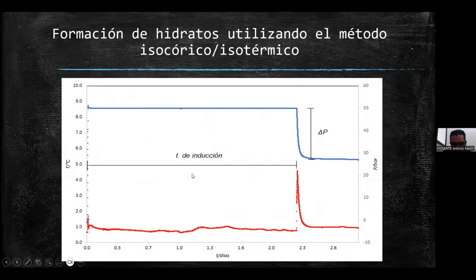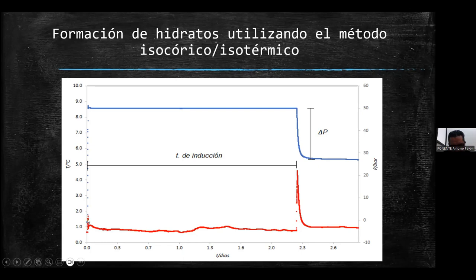Cuando empezamos a formar el hidrato, fijamos una temperatura, por ejemplo, un grado centígrado. Cuando la presión y la temperatura en el sistema están estables, se procede a inyectar el gas. Hay un incremento de la presión por la inyección del gas, hasta 50 bar, donde se deja de inyectar. Aunado a eso, existe un pequeño incremento de temperatura porque está aumentando la presión.